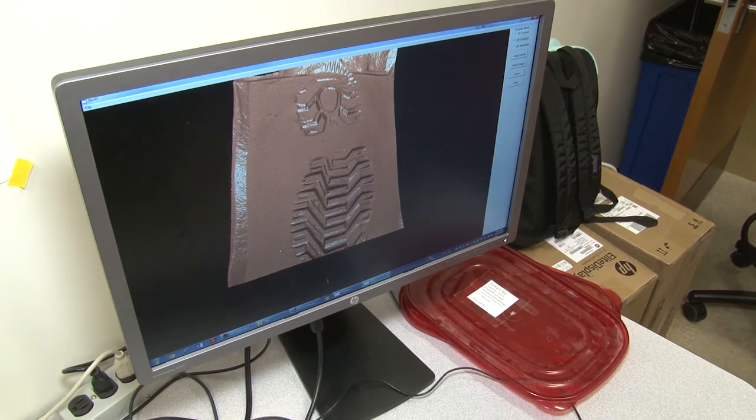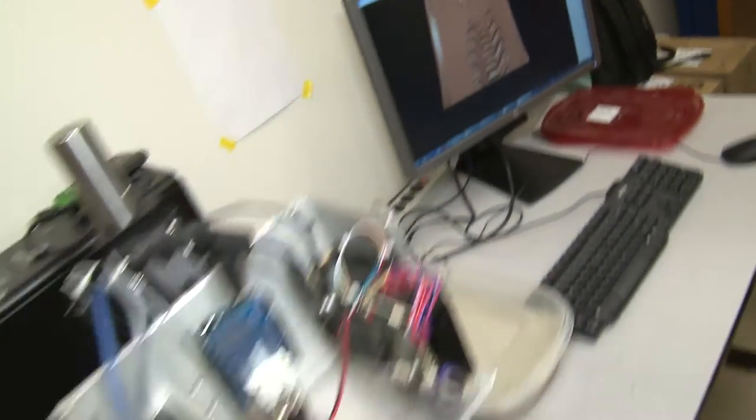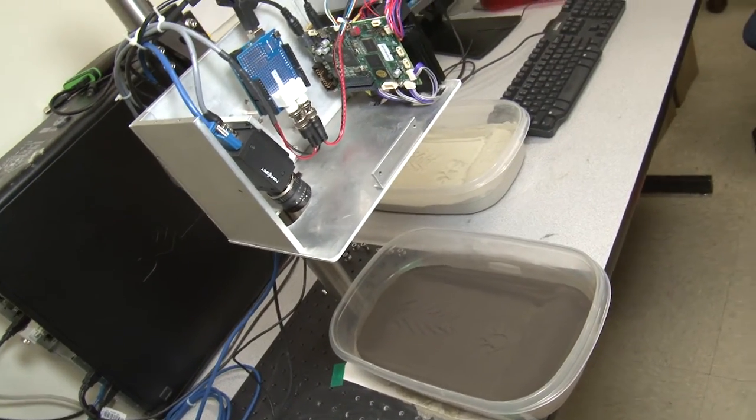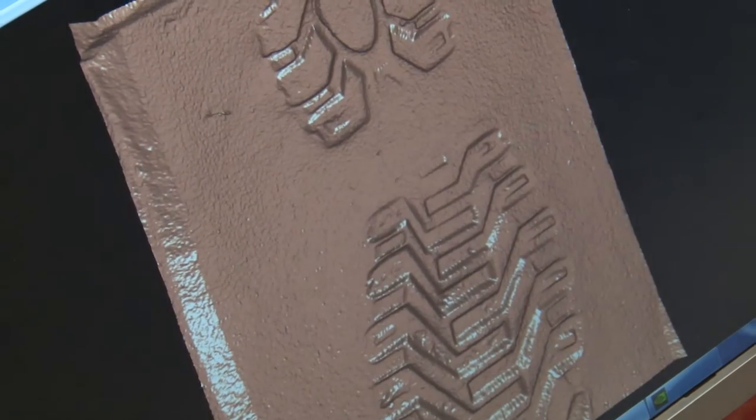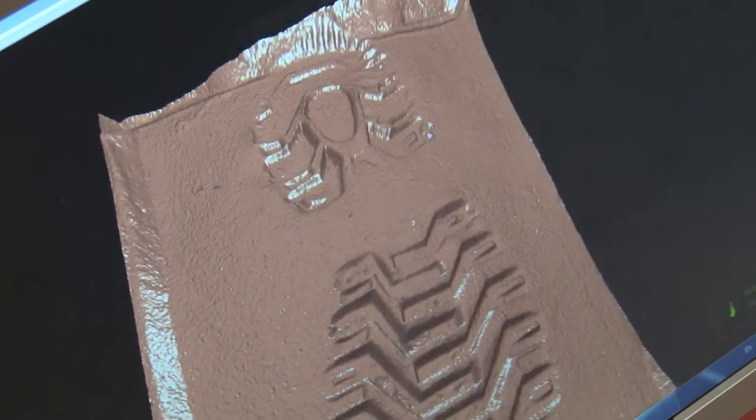We work on getting a 3D image of shoe prints on soil. We use a projector shining encoded light onto the object, and the camera captures from another view angle, capturing the images reflected by the object.